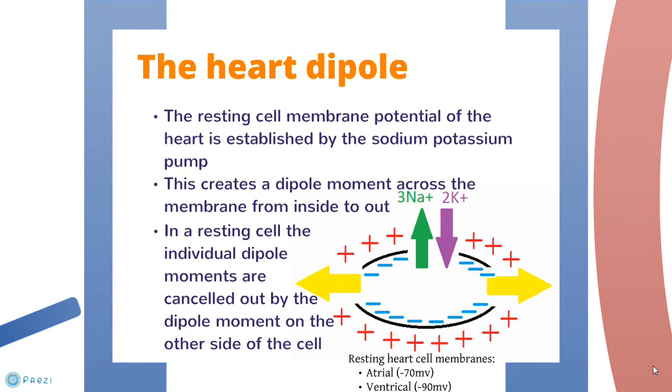This is created by the active transport mechanism of the sodium potassium pump which pumps three sodium ions out of the cell for every two potassium ions it pumps in. This leaves an excess of sodium outside of the cell as it cannot diffuse back into the cell as most of the sodium ion channels are shut.